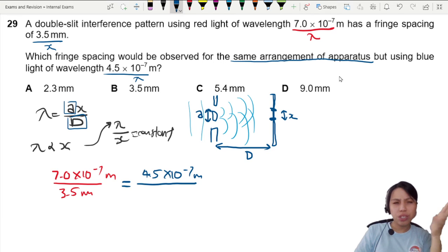What is the fringe spacing? Fringe spacing in millimeter? This one, press calculator, I should get 2.25 millimeter.